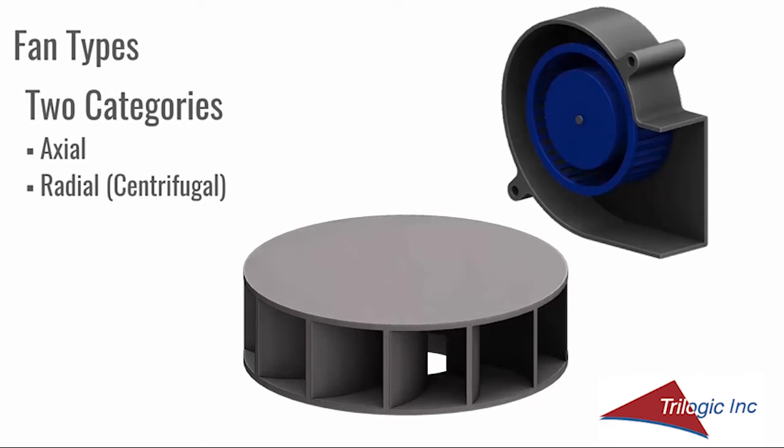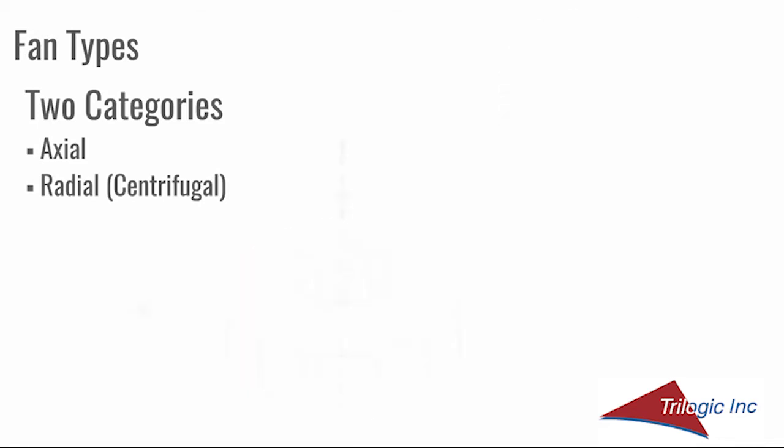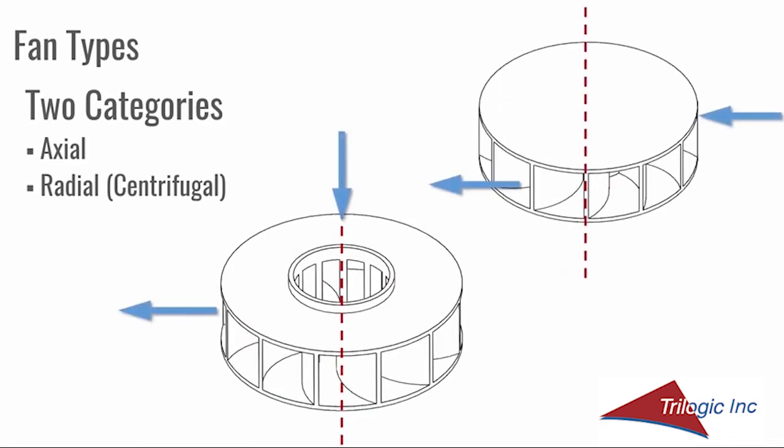The second category is radial or centrifugal. Air movers of this type are known by many different names. The two examples shown are a centrifugal blower and a motorized impeller. The blower image is a cross-section view and isn't showing the inlet. Fans of the radial type have flow that enters or leaves in a radial direction from the axis of rotation.